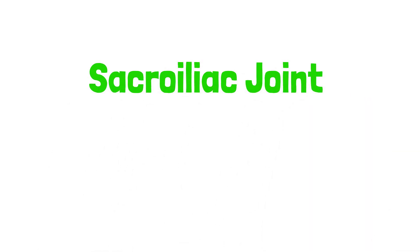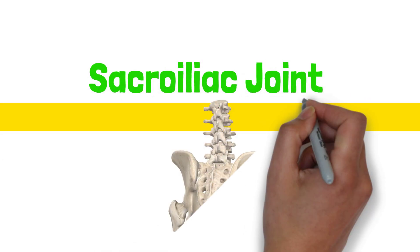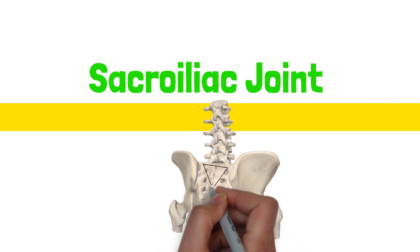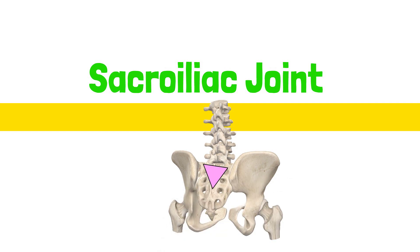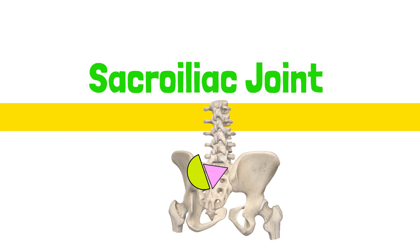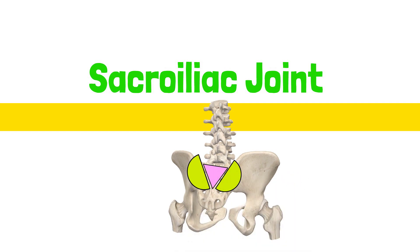Hello! In this video we will examine the sacroiliac joint movement. The sacroiliac joint is composed of the sacrum articulating with the two innominates. The movement of the joint can be considered from three perspectives.